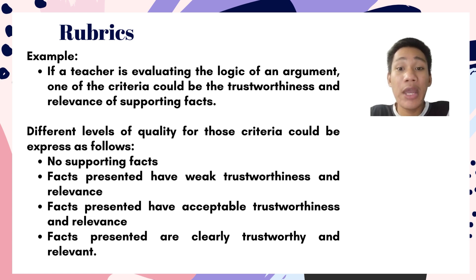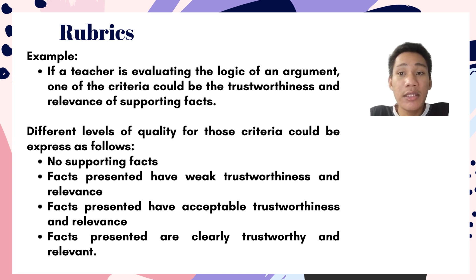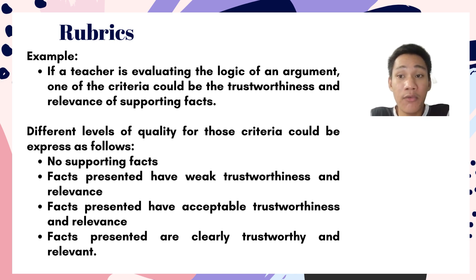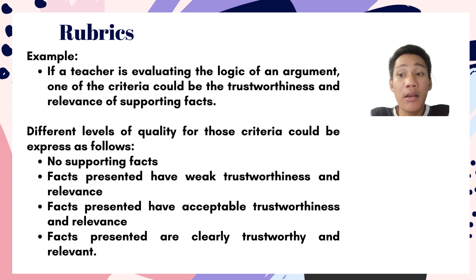For example, if a teacher is evaluating the logic of an argument, one of the criteria could be the trustworthiness and relevance of supporting facts. The different levels of quality for that criterion could be expressed as follows: level 1 — no supporting facts; level 2 — facts presented but with weak trustworthiness and relevance; level 3 — facts presented with acceptable trustworthiness and relevance; and level 4 — facts presented are clearly trustworthy and relevant. This is one example of a rubric with different levels of quality.